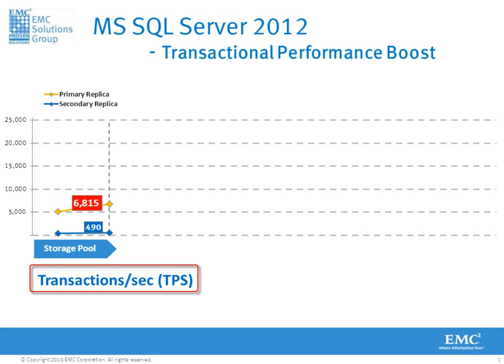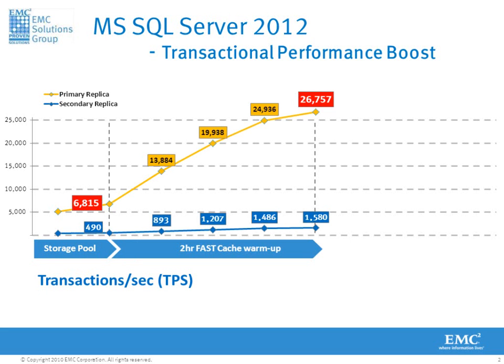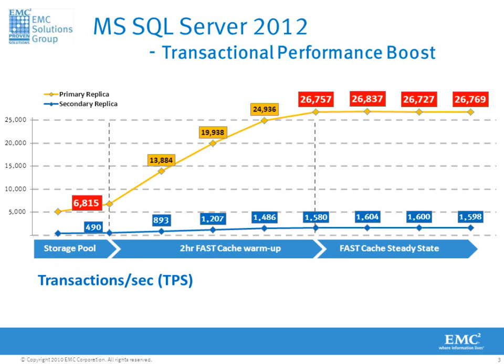Here we see a graphical representation of our Perfmon data. We see the transactional performance boost received from the introduction of EMC fast cache to our environment, with the ability to service transactions per second having increased from 6,000 to over 26,000 transactions per second.